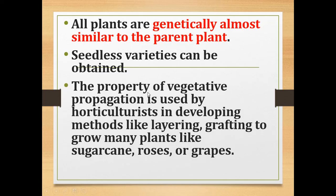Through vegetative propagation we can obtain seedless varieties of plants. This property of vegetative propagation is used by horticulturists in developing methods like layering and grafting to grow many plants like sugarcane, roses or grapes.